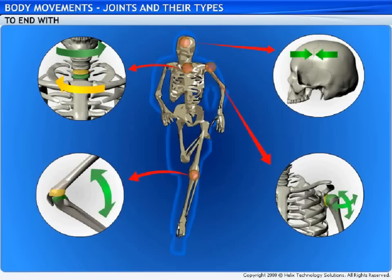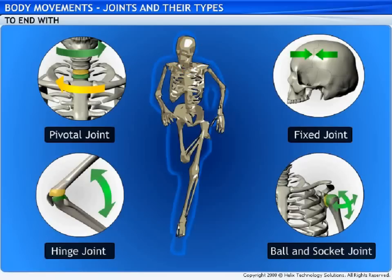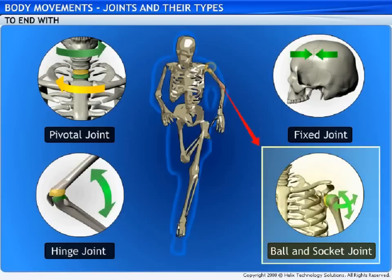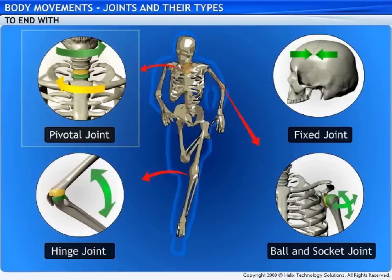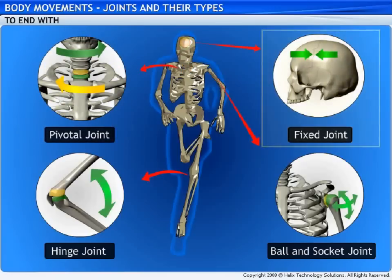Congratulations, you have completed the lesson on joints and their types. In this lesson you have learnt to: define joints; identify different types of joints in the human body; describe how the ball and socket joint works; describe how the hinge joint works; describe how the pivotal joint works; and describe how fixed joints work.